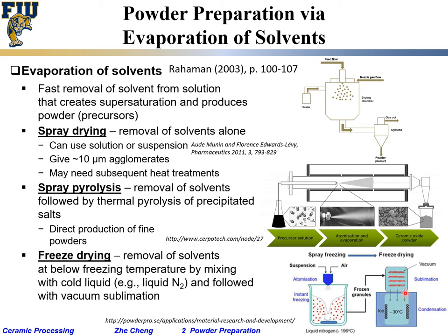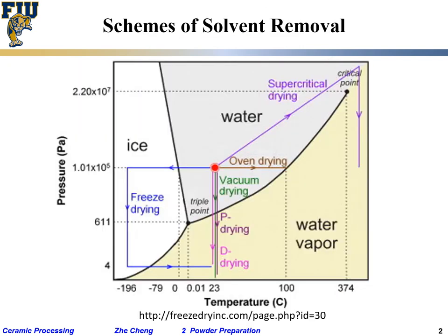You then put the frozen granules into a vacuum chamber. At slightly higher temperature under vacuum, the liquid ice becomes vapor directly without going through the liquid phase — that's sublimation — and that's how we get fine powder. Spray pyrolysis is used in the lab; freeze drying is used by some people for food processing and other applications.